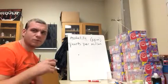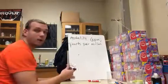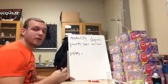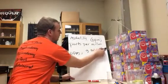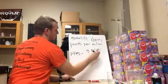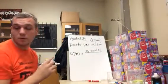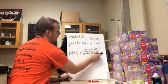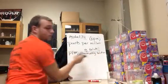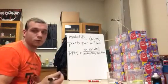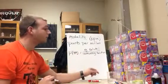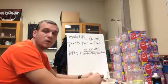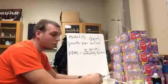When we think about parts per million, we always measure that as grams of solute divided by one million grams of solution. We use ppm for very, very small traces of particles.